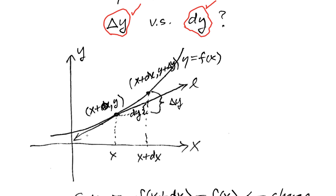Suppose I have the graph of a function here — a nice smooth differentiable function, y equals f of x. I've got a point on that curve, just calling that x, y. Think of x as being fixed for now. And now I'm going to take a nearby point — I'm going to make a small change in x. x is going to change from x to x plus dx. Some people could use a delta x there, but we're just going to use dx, a change in the independent variable.